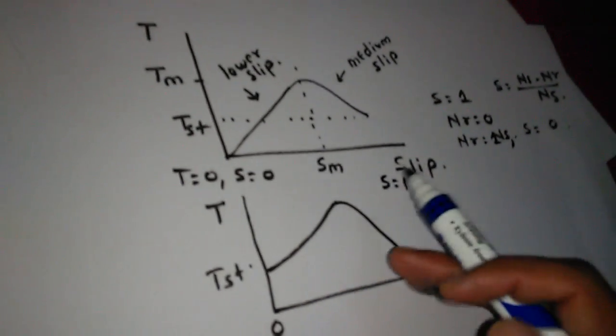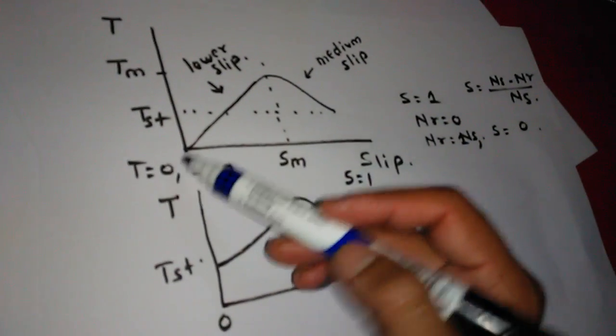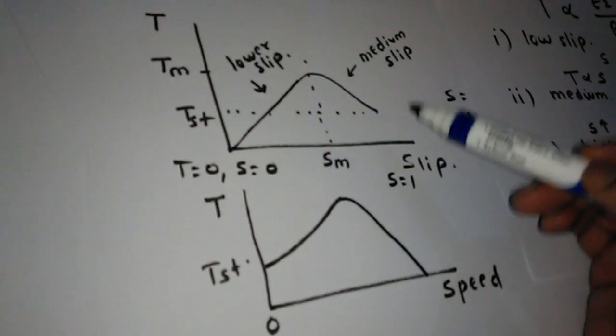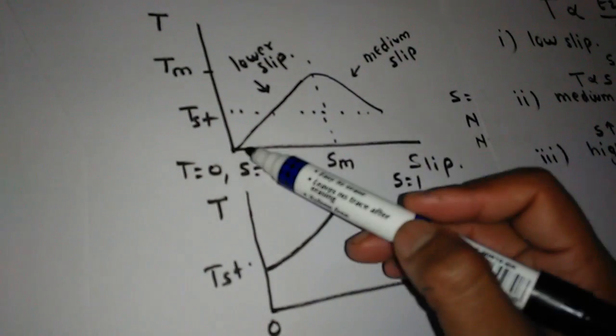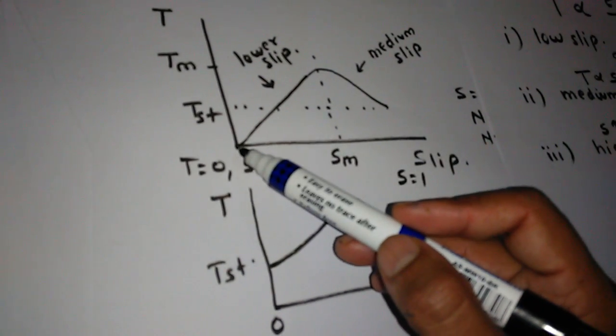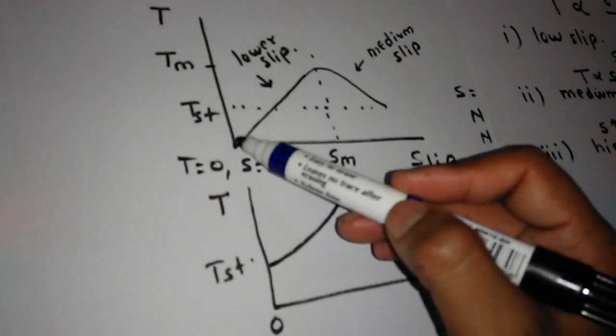Now we will plot the diagram. When T equals 0, this is torque on the y-axis and slip on the x-axis. So we can plot a diagram when T equals 0, S equals 0. This is the origin point.